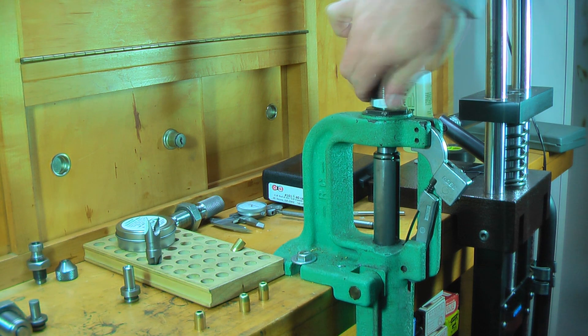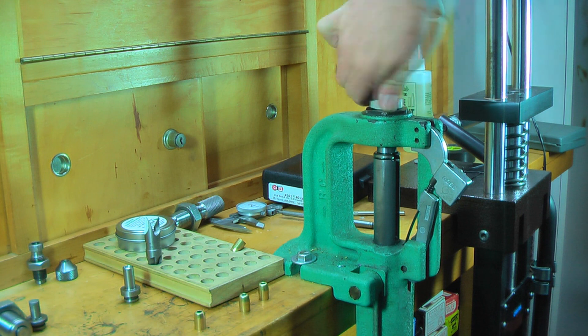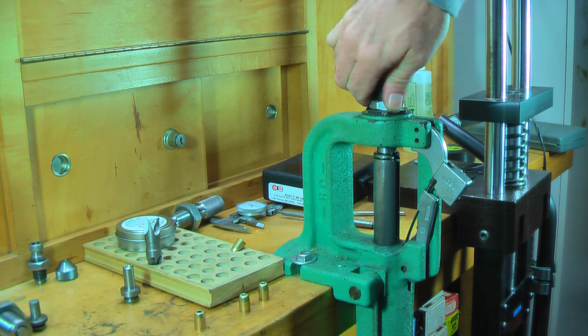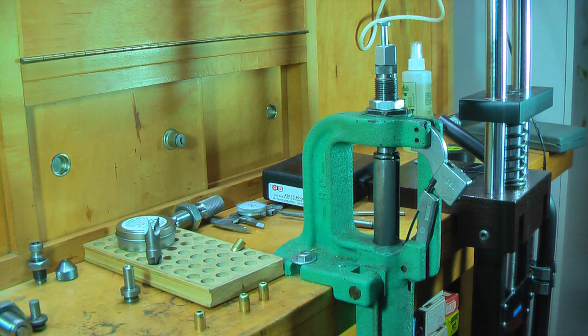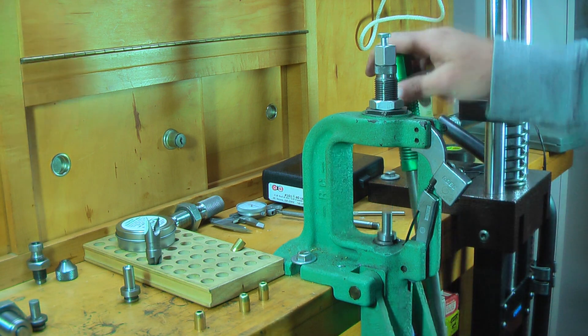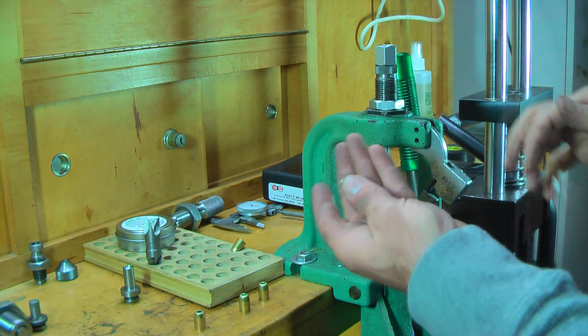And what we're using for a core is a Lee 124 grain 9mm truncated cone bullet that's cast out of wheel weights. And what this guy's for is to eject it.